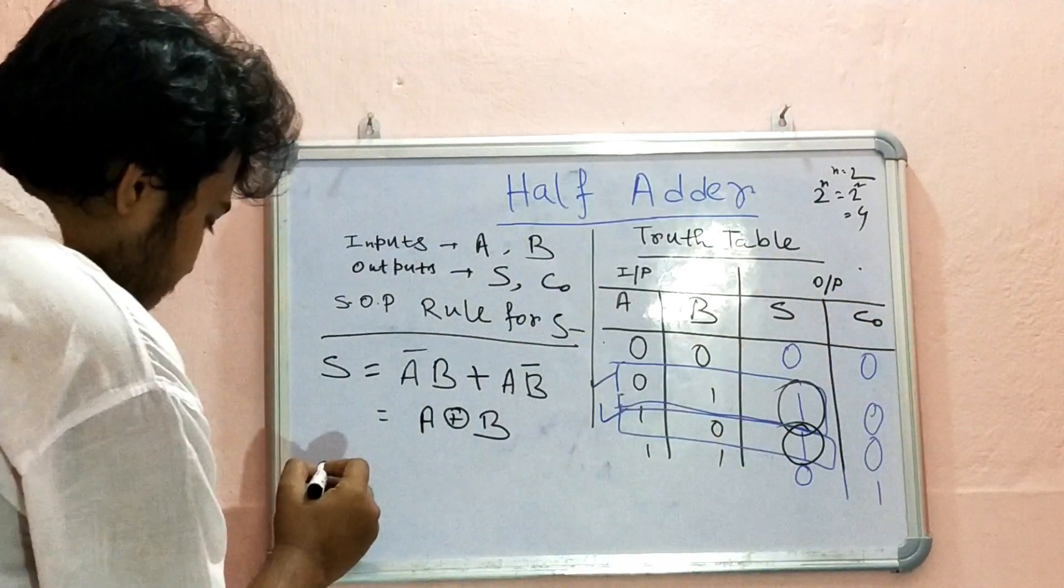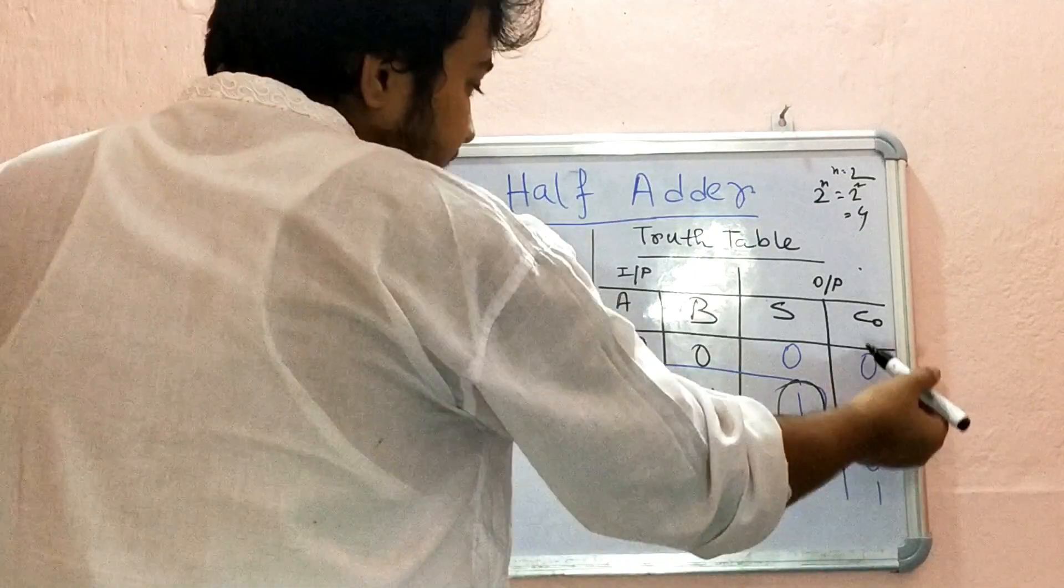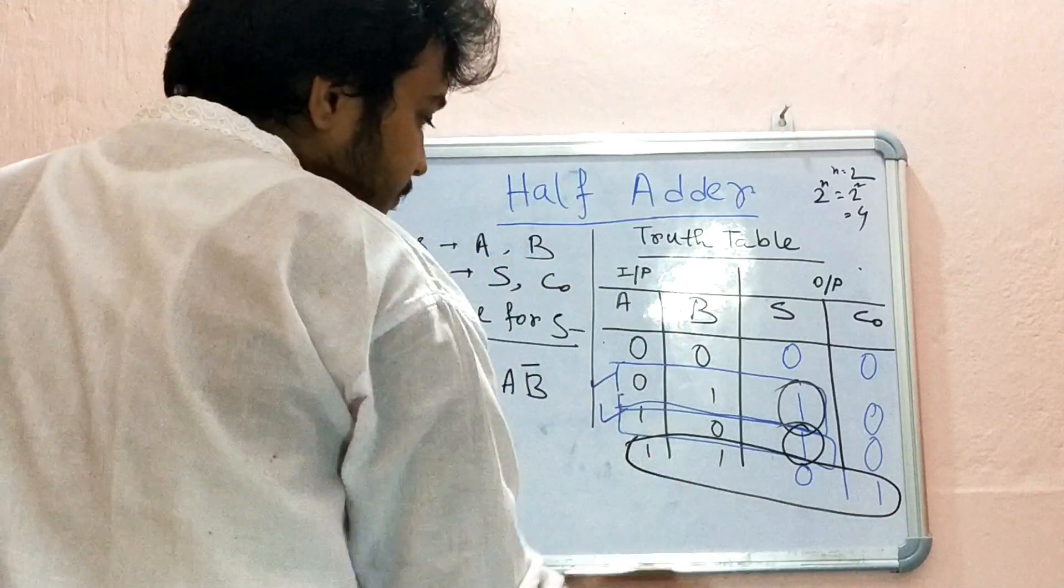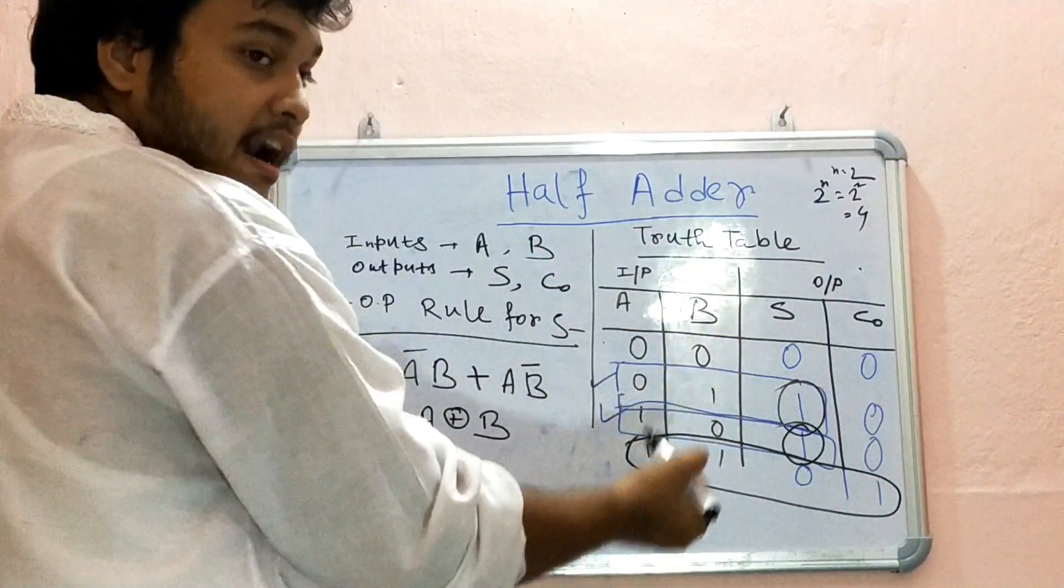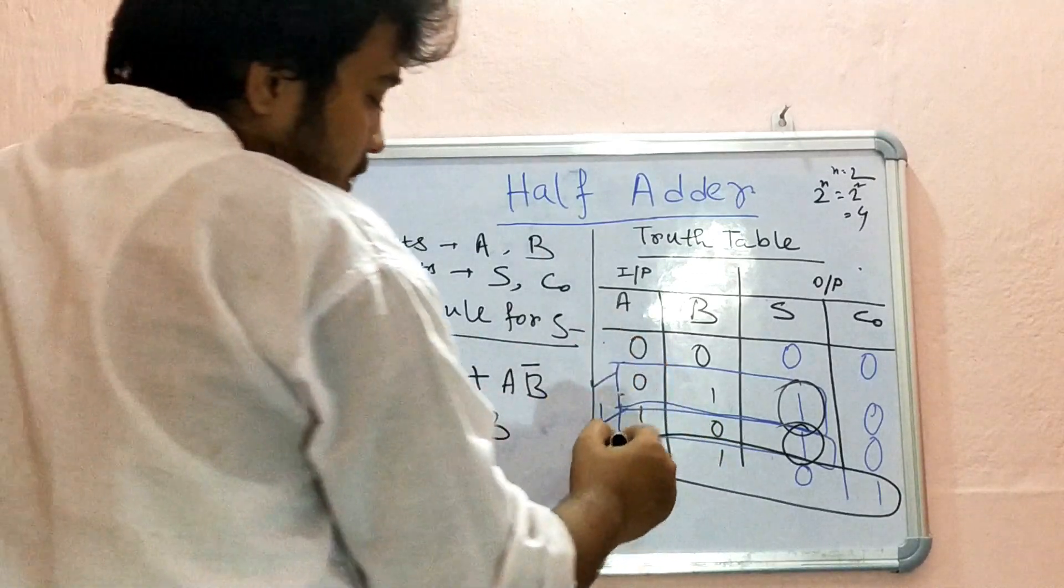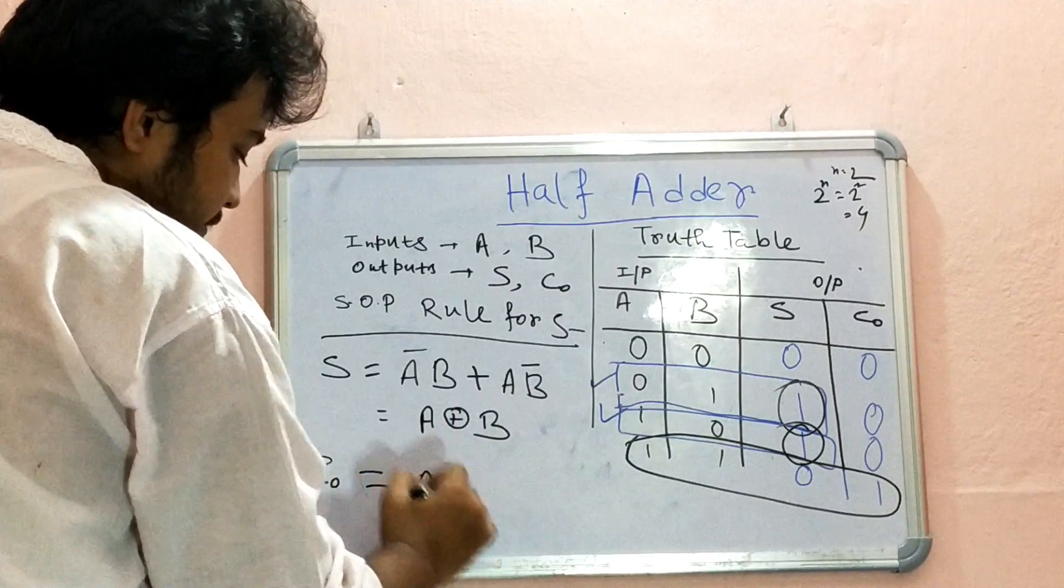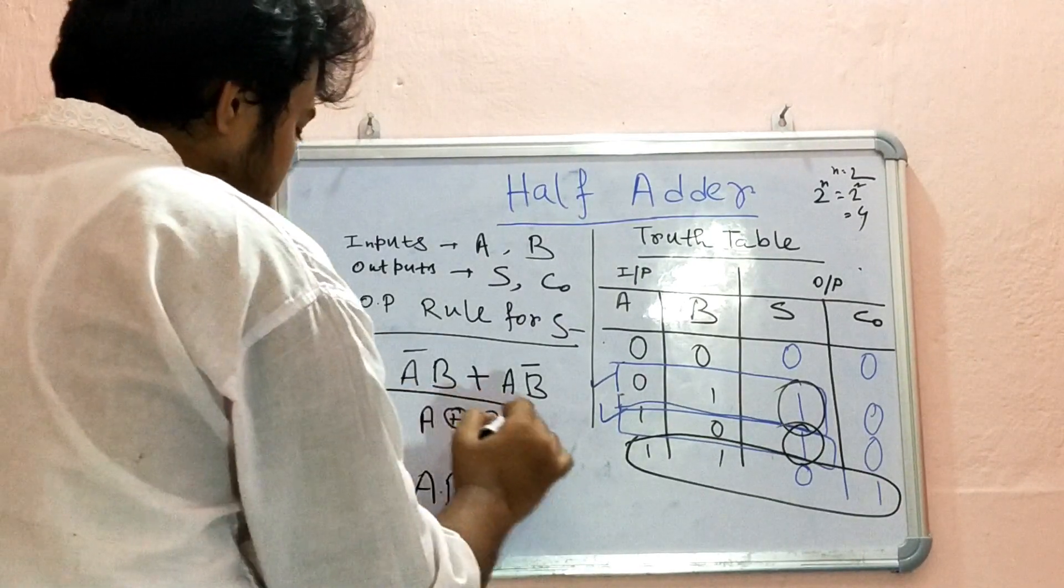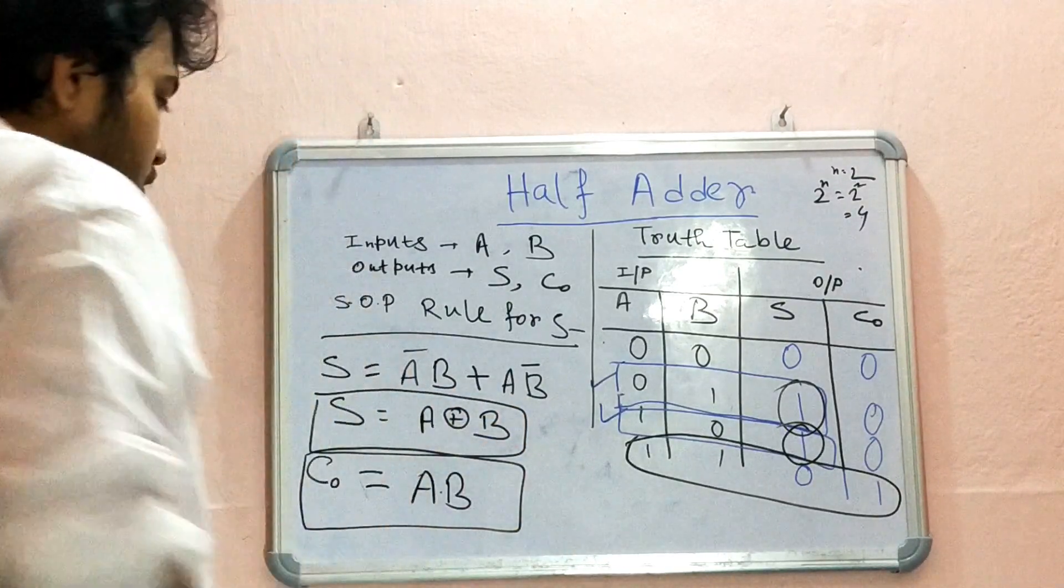Now our carry out, Co. Everywhere is zero and only at this one place is one, when both A and B inputs are one. So we can simply write this equals to A and B. So this is our sum expression and this is our carry expression.